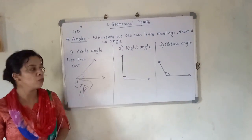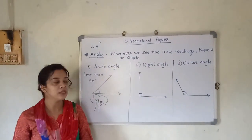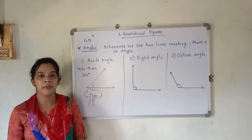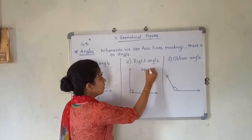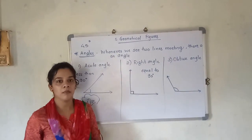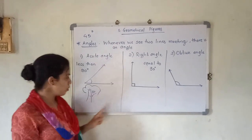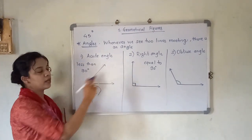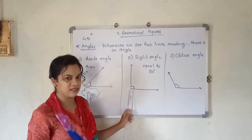The next important type is the right angle. A right angle means when it is equal to 90 degrees. Always remember: for denoting a right angle you are supposed to use the square corner symbol — not the arc symbol. The arc symbol is only used for acute angle and obtuse angle; for right angle specifically you use the square symbol.